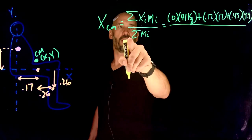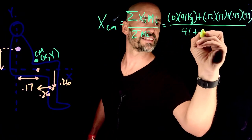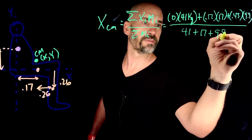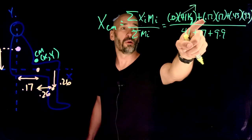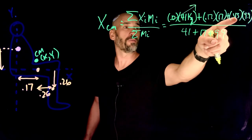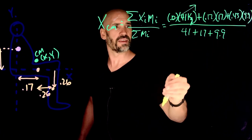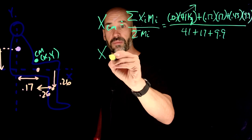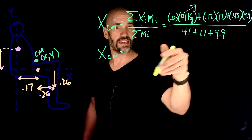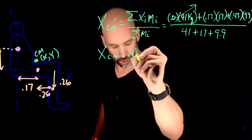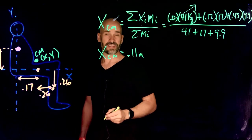And that's divided by all of our masses added together. So that's 41 plus 17 plus 9.9. This goes away. And now it's just simple calculator stuff. If I do 0.17 times 17 plus 0.43 times 9.9 divided by all those guys added together.